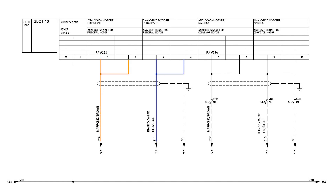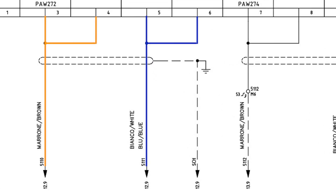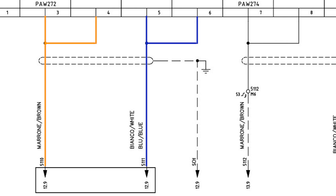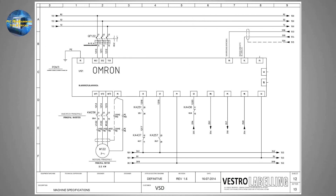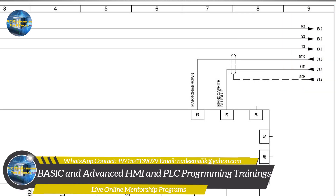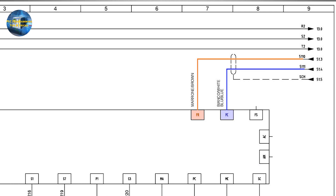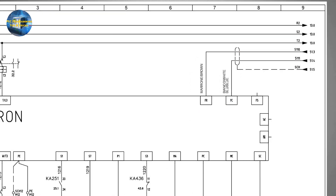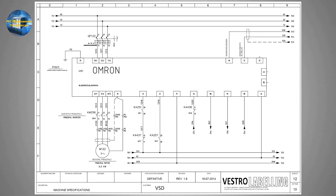On page 51, two wires — brown and blue — come out of the output terminals of this card. The brown wire has the tag '5110' and the blue wire has the tag '5111.' Arrow marks with tag 12.9 indicate we go to sheet number 12, column number 9 to find these wires. The same wires 5110 and 5111 appear on that sheet in column 9 and are connected to the VFD analog input terminals FR and FC. This analog signal is a frequency reference signal to control the motor speed from the PLC.